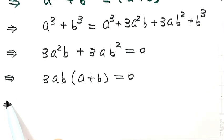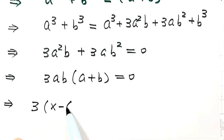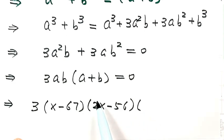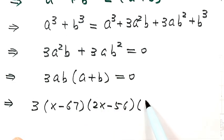So now it's time to use back substitution. So we remember a equals x minus 67, b equals 2x minus 56, then a plus b equals 3x minus 123, then equals zero.